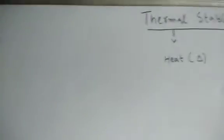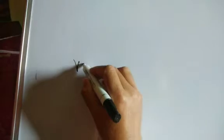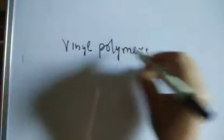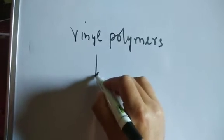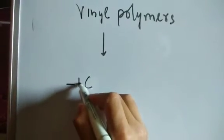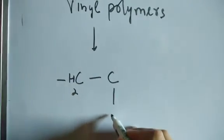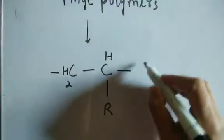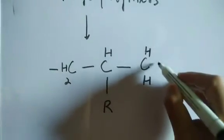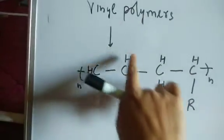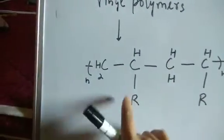For example, one of the striking cases is vinyl polymers. A vinyl polymer has an R group — if it's chloride, it's called vinyl chloride; if it's acetate, it's called vinyl acetate. This repeating unit forms a vinyl polymer.